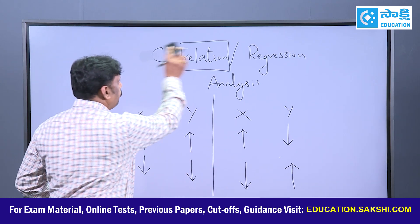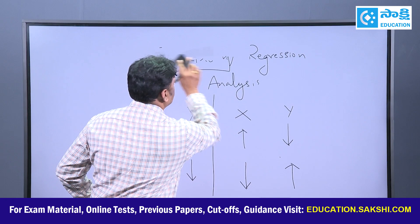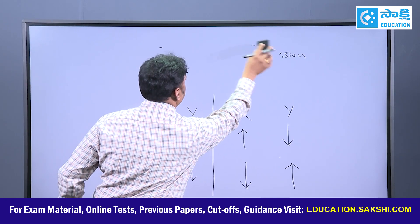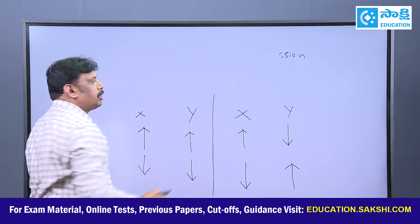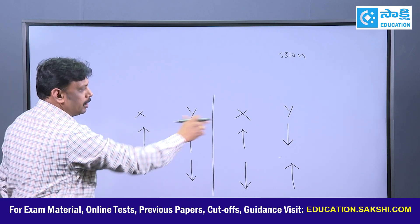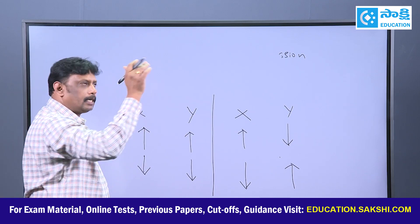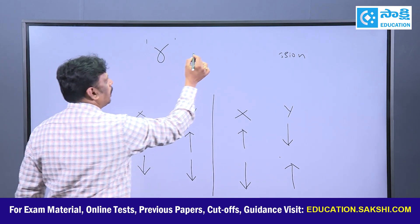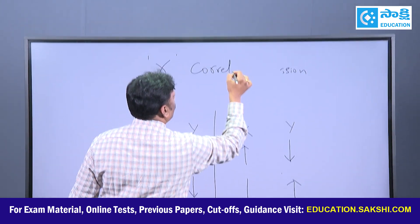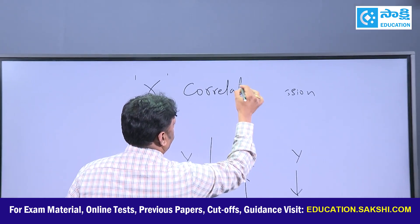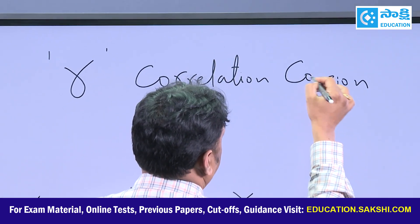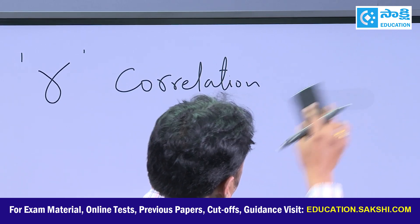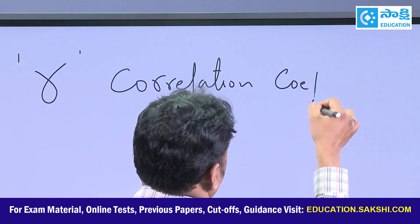When we say we are studying the relationship between two variables, there should be something to measure this relation. That something we name as 'r', called the correlation coefficient, or you can also name it the coefficient of correlation.